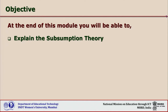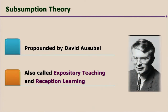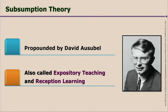At the end of this module, you will be able to explain the subsumption theory of David Ausubel. This theory was propounded by David Ausubel. Unlike other theories of learning which try to explain how learning takes place, Ausubel went on prescribing the procedure for making verbal learning meaningful. Most of our classroom learning is verbal learning delivered through lectures and explanation — this is called expository teaching — and students receiving this information are engaged in reception learning. Ausubel's theory is about how to make teaching effective using subsumers so as to make reception learning meaningful.